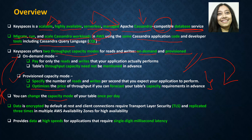You can change the capacity mode of your table once per day. Data is encrypted by default at rest and all client connections require TLS. Your data is also replicated three times across different availability zones. Keyspaces provides data at high speed — for example, applications like trading applications that require single-digit millisecond latency can certainly use Keyspaces for that.